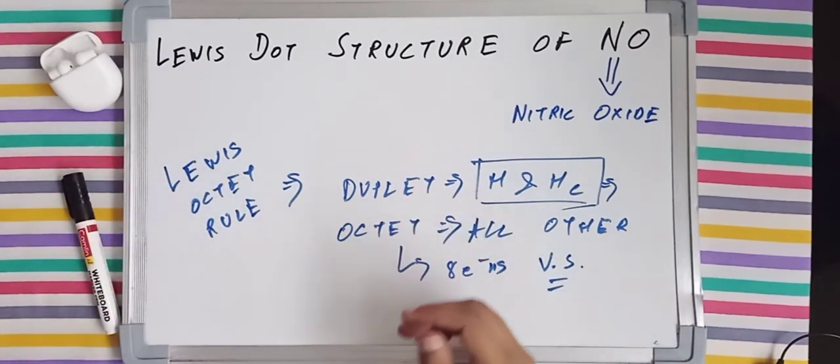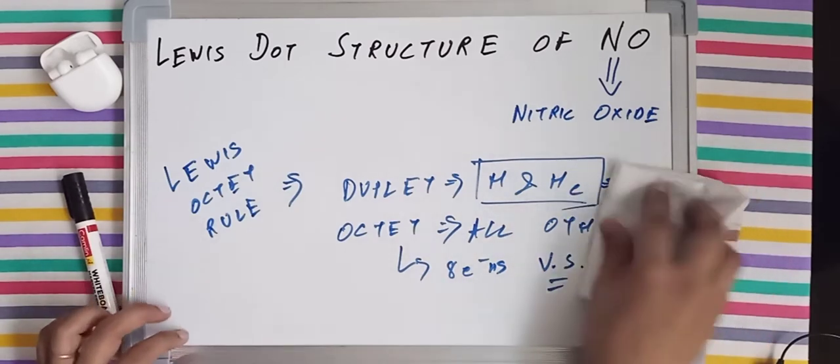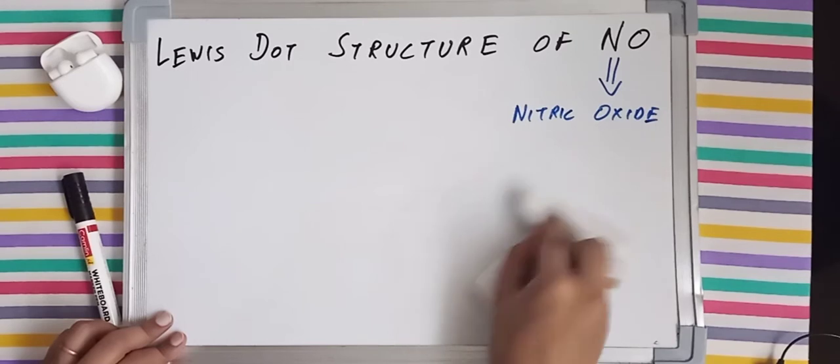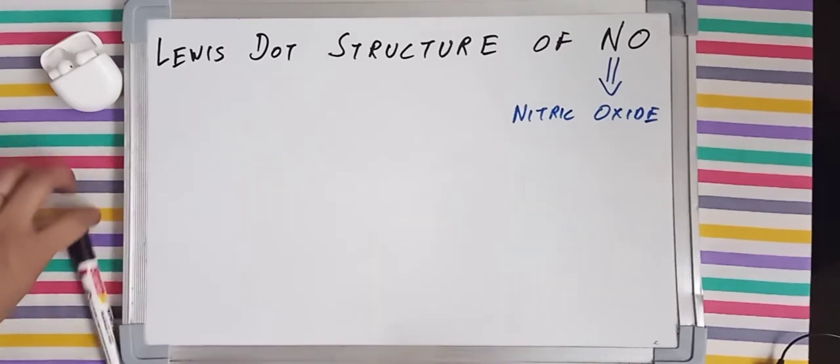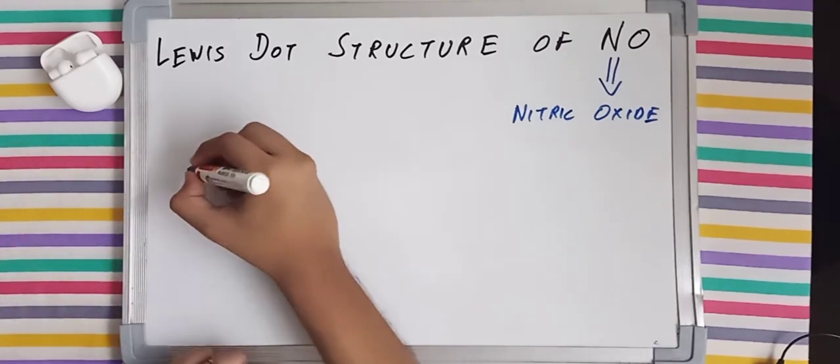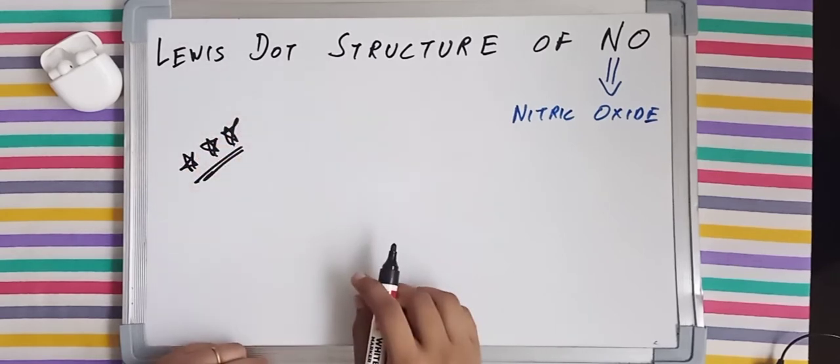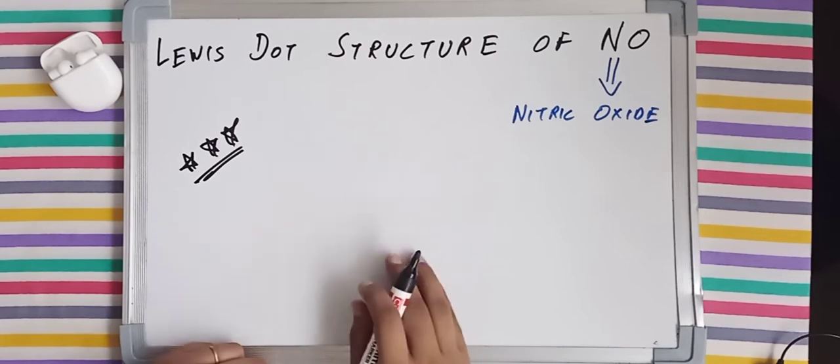Now let's proceed drawing the structure of NO. As I told you, this is an exception to Lewis octet rule, so I am drawing three stars which will remind you guys that this particular molecule is an exception.